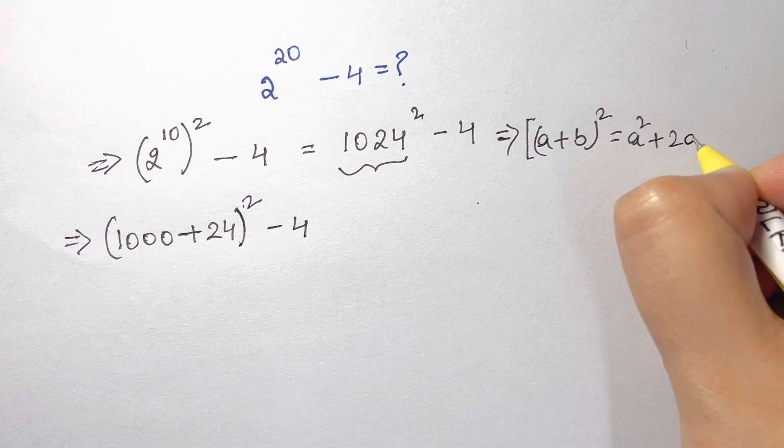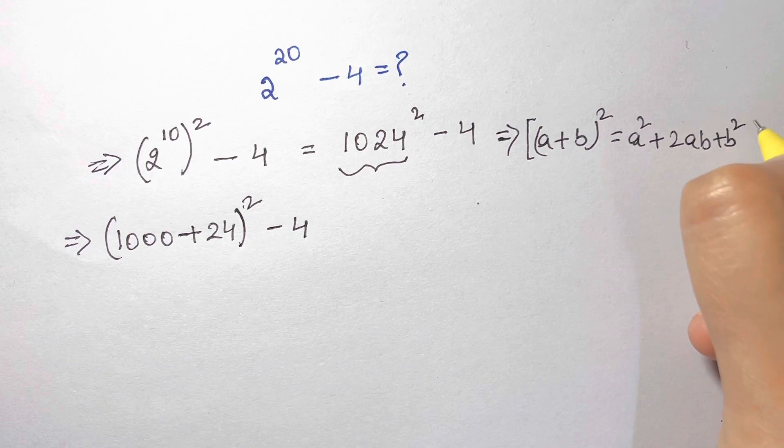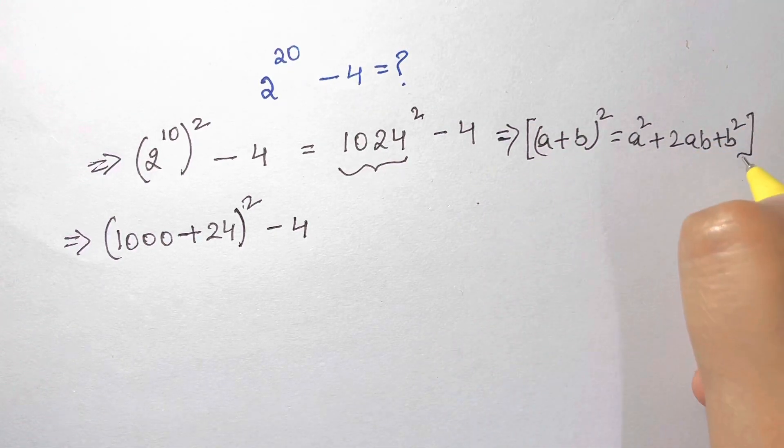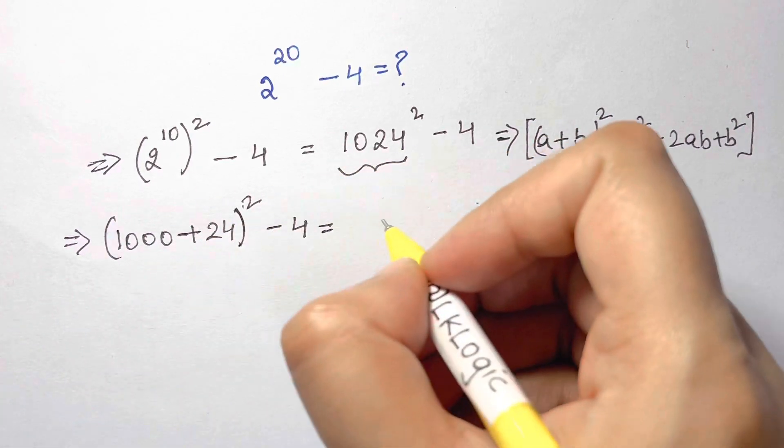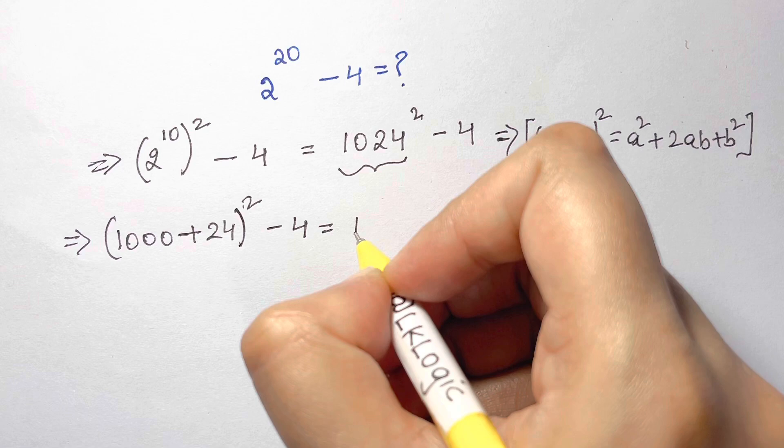So we're going to apply this here. That's equal to a square is 1000, so we have 1000 squared plus 2 into 1000 times b is 24, plus b square is 24 square.